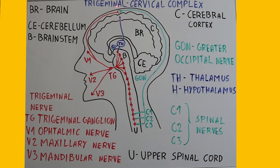There is also a third interaction between the trigeminal system and the greater occipital nerve: specifically from the upper part of the brainstem, sensory pathways project to the thalamus. From the thalamus, the signals are relayed to the hypothalamus and to the cortex. It's important to note that all sensory inputs, except for smell, are processed through the thalamus, which plays a crucial role in vestibular migraine.